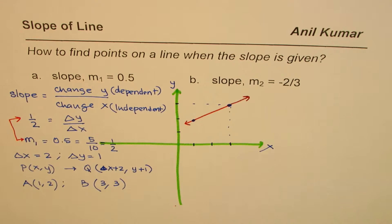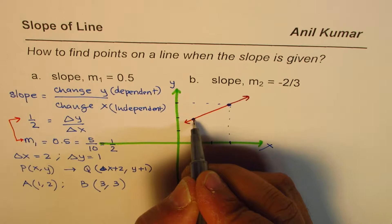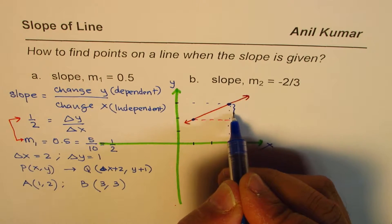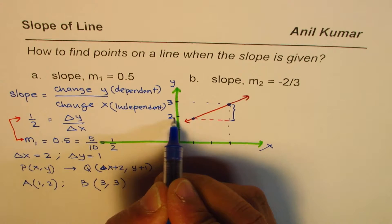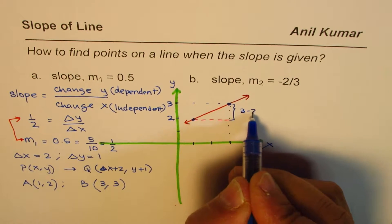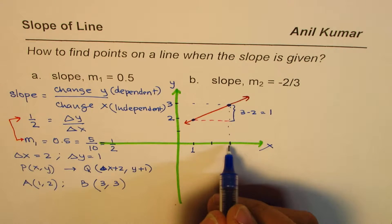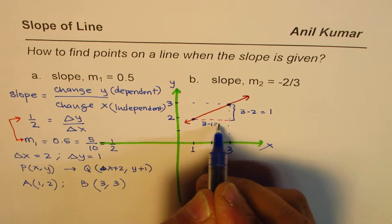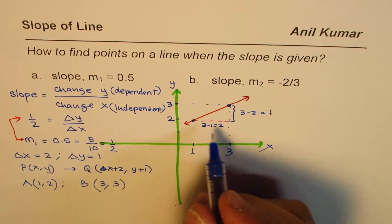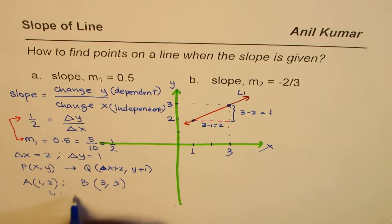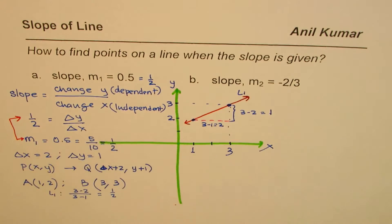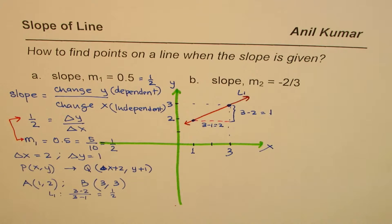If we join these two points we get a line whose slope will be one half. Let's verify by making a triangle. The rise is the y-value difference: 3 minus 2 equals 1. The run is the x-value difference: 3 minus 1 equals 2. So the slope is 1 over 2, which equals 0.5 — confirmed.